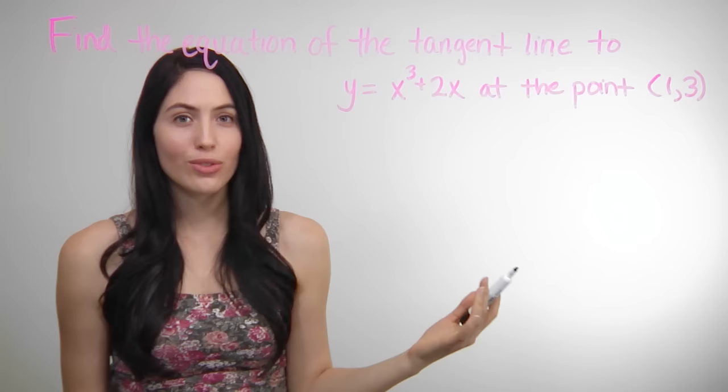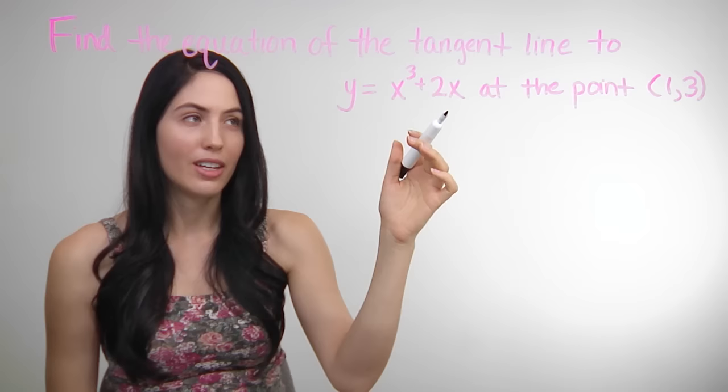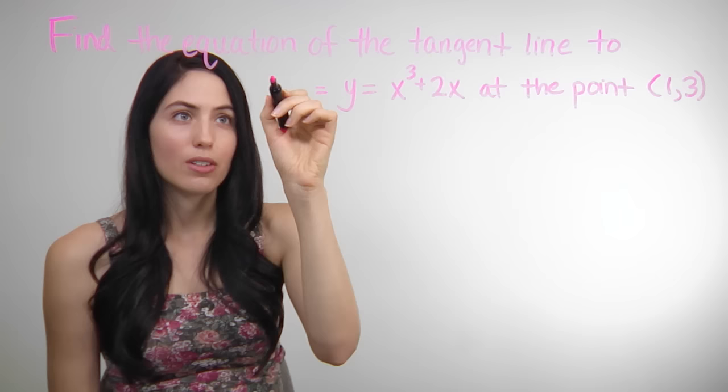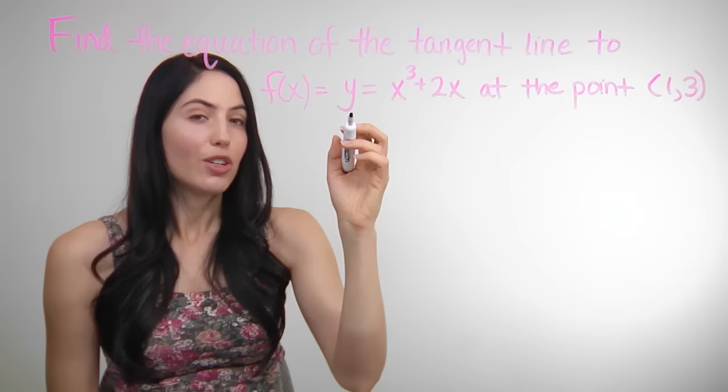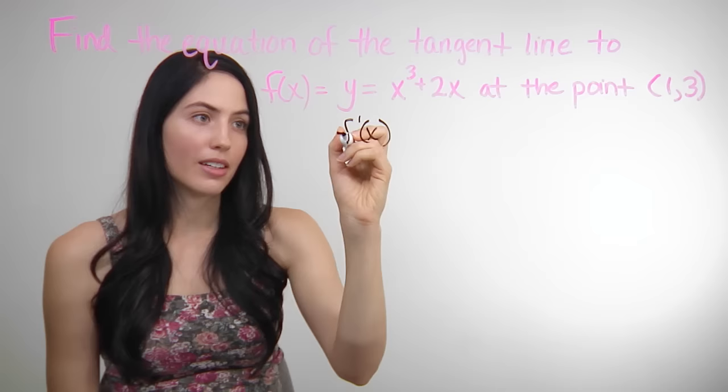How do you start this problem? It's always going to be the same four steps in these tangent line problems. The first step is to take the derivative of the equation that you're given. This y equals is also f of x — it's also a function. You want to take the derivative of the equation you're given, so f prime of x is your first step.